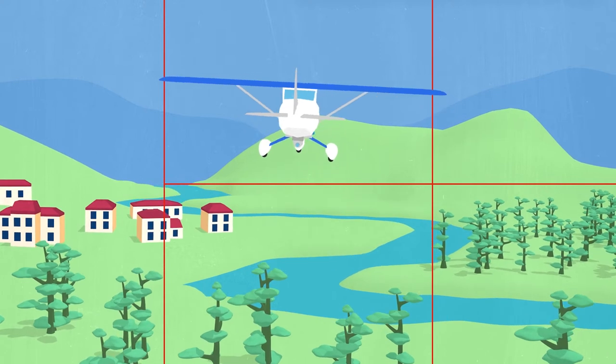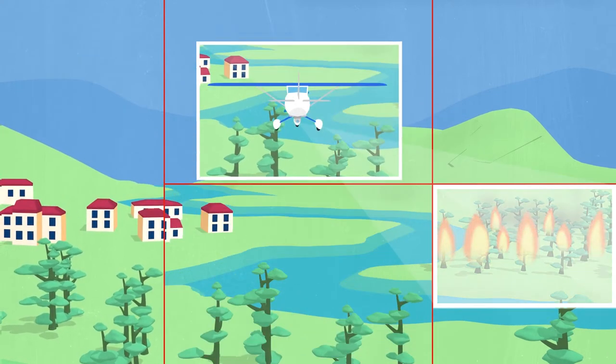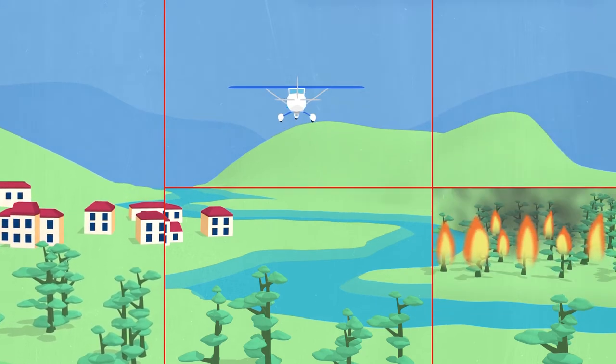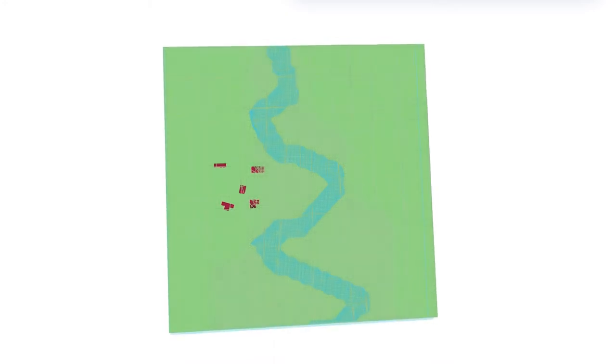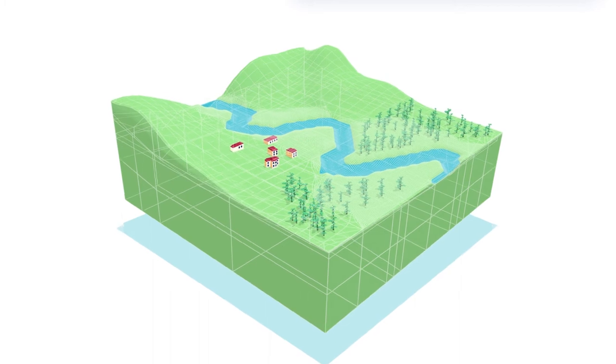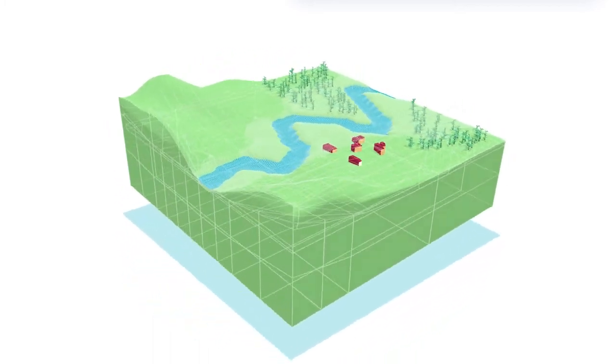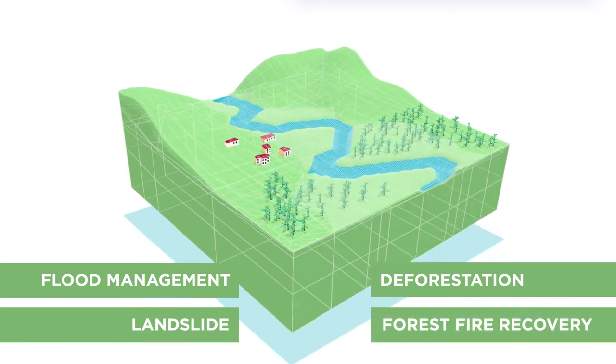One of these challenges is disasters like earthquakes, floods, landslides, and fires. We use Earth Observation sensors to obtain spatial data of the Earth's surface. From this, we generate 3D landscape and city models that support applications like flood management, landslide monitoring, and deforestation and forest fire recovery.